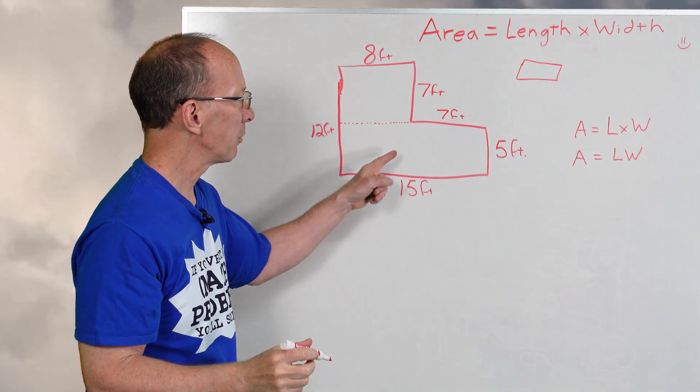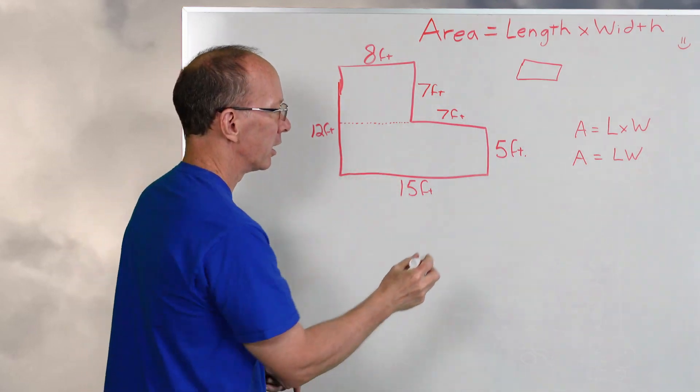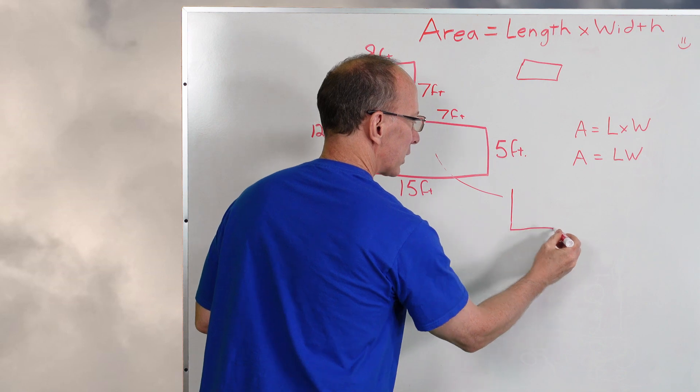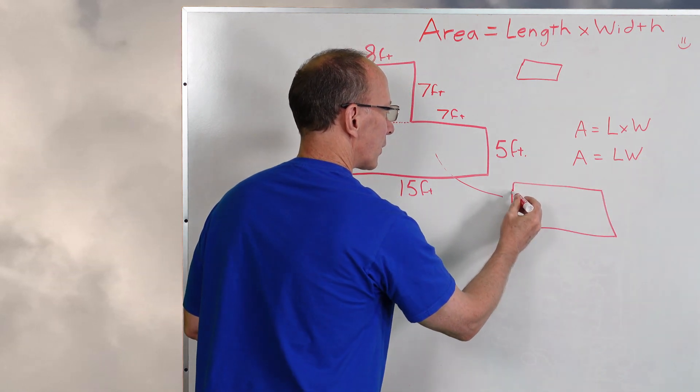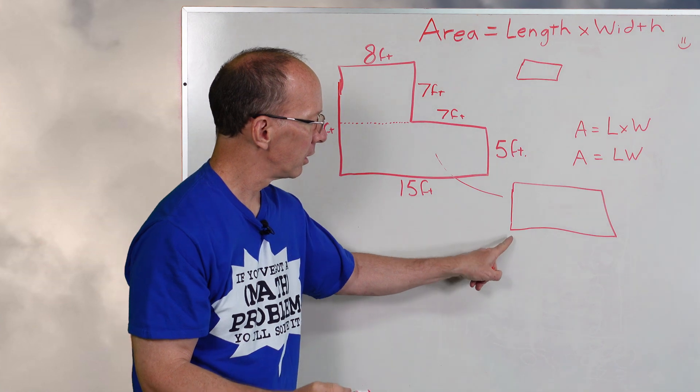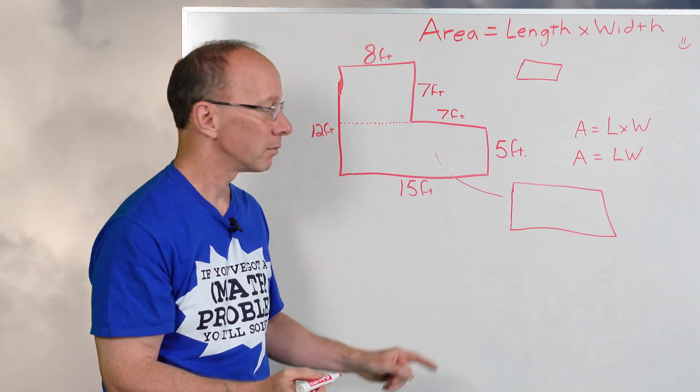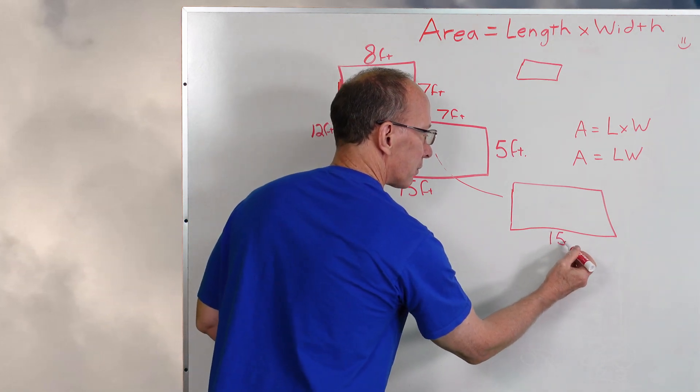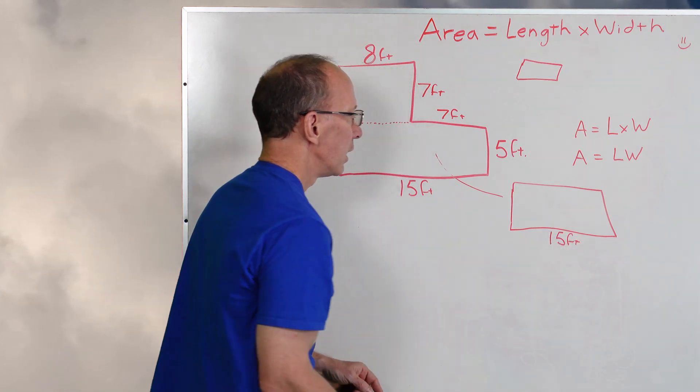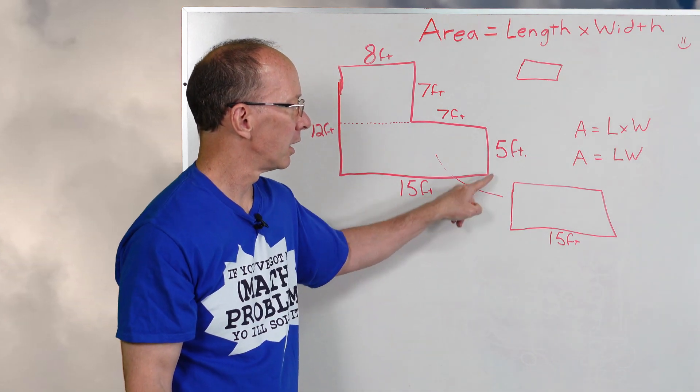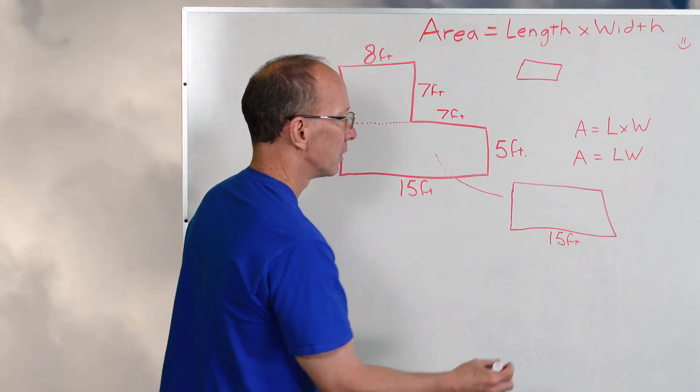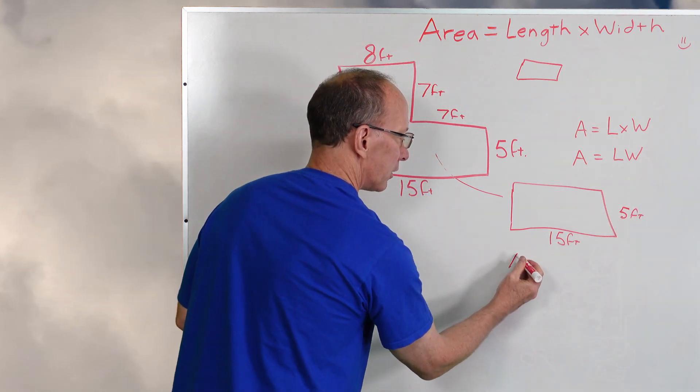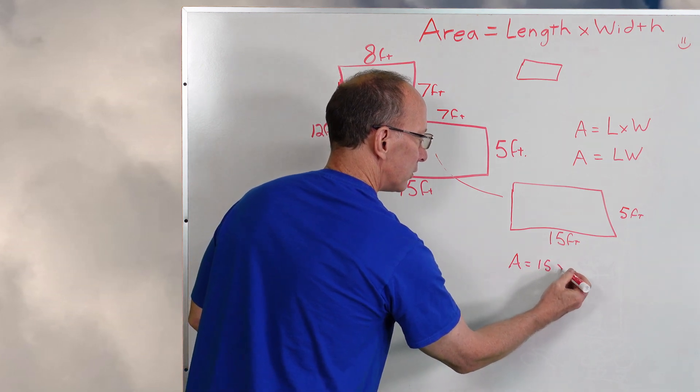I'm going to take this rectangle right here and draw a line all the way over here - this will be this rectangle right there. Now I know from here to there is 15 feet. The length would be 15 feet. And what is the distance from here to there? 5 feet. So we go ahead and put 5 feet right there, and our area would be 15 times 5.